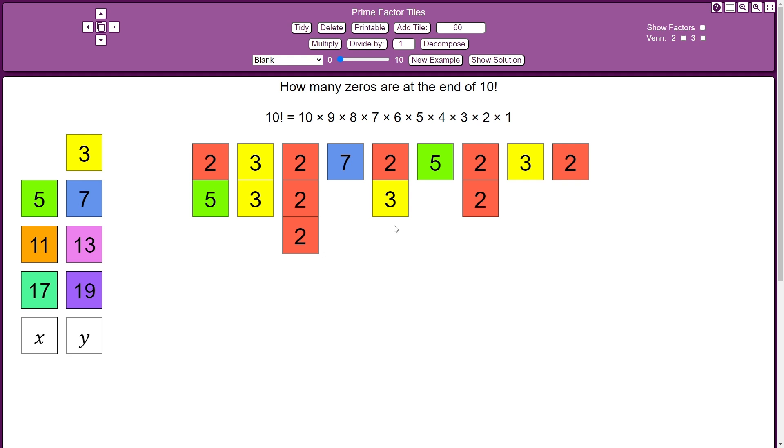I need to pull out any factor of 10. So 2 and 5 here, that gives me 10. And I can make another 10 by pulling out this 5 and any of the 2s I want.